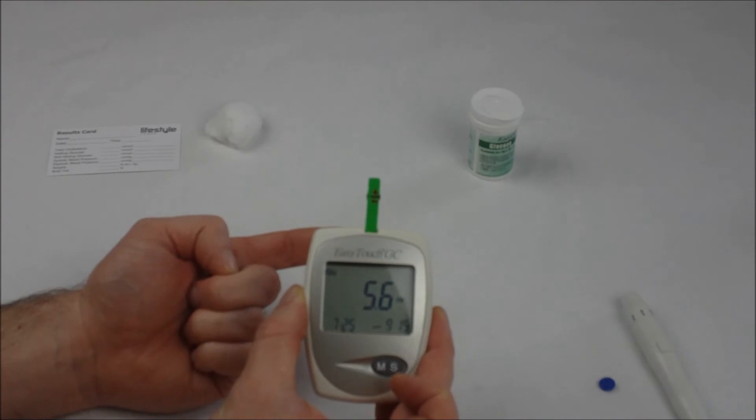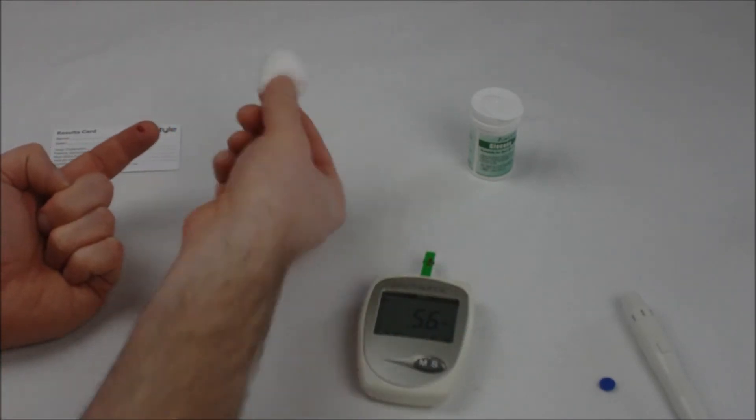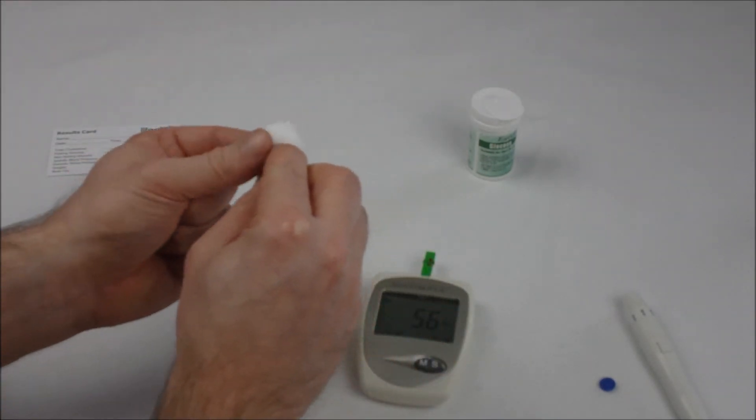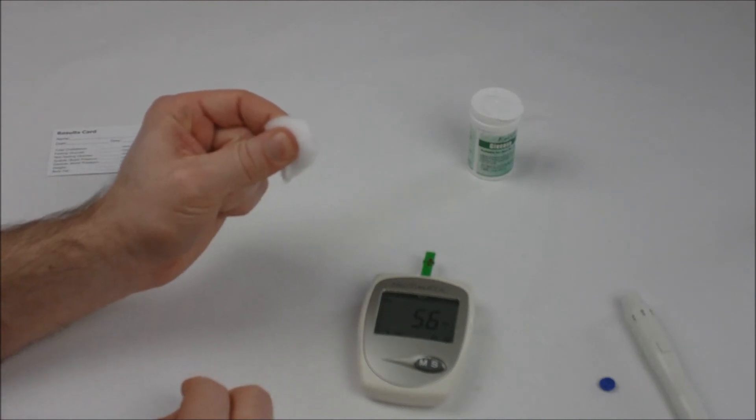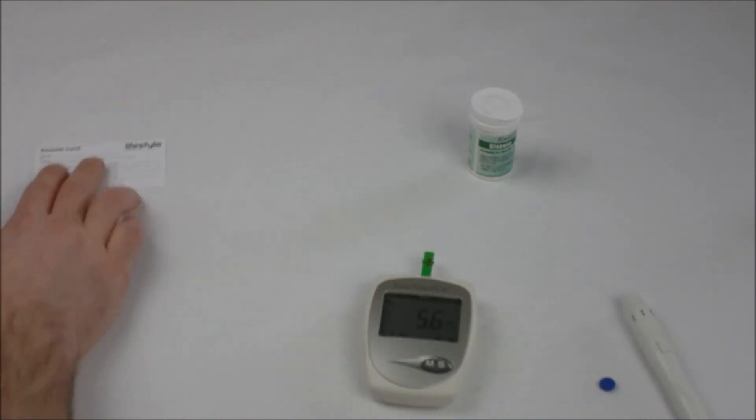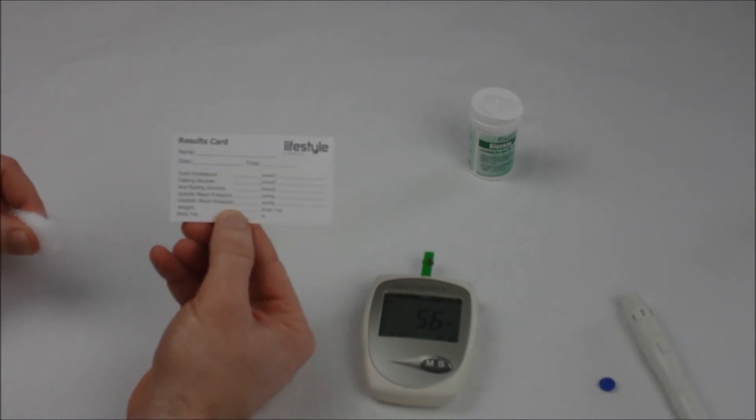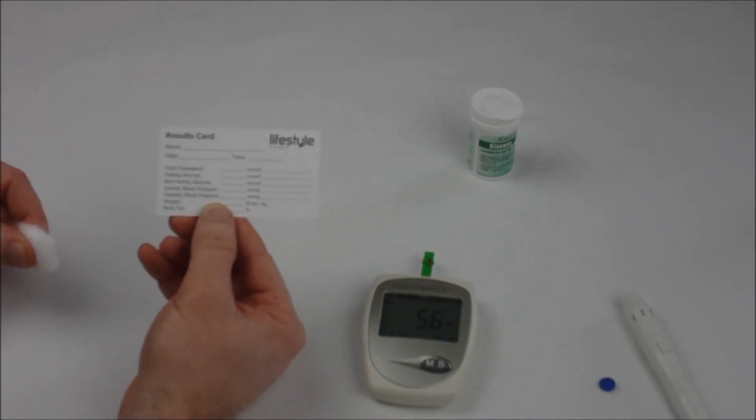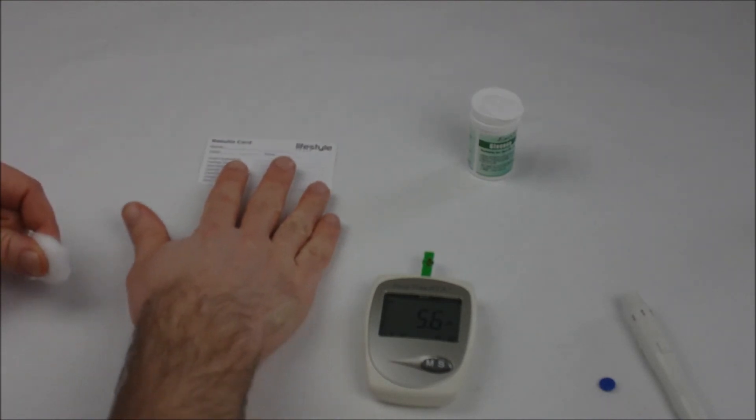Mine's 5.6 millimoles per liter. It's a good idea to have some cotton wool around to hold over your bleeding finger. That should stop in a minute or so. Then you can take your 5.6 measurement, or whatever yours is, and write it on your results card alongside your fasting glucose.